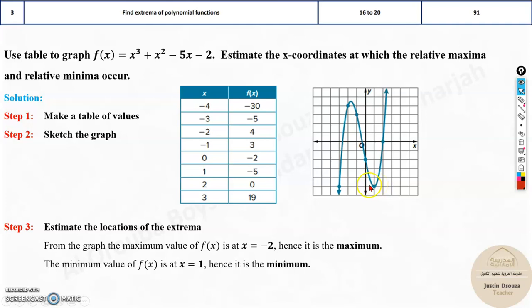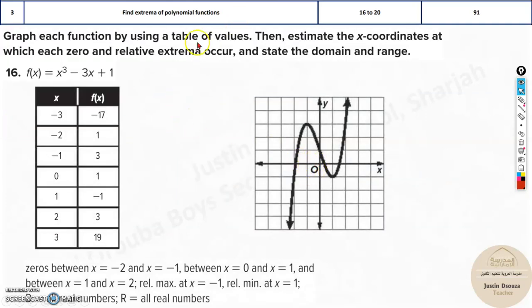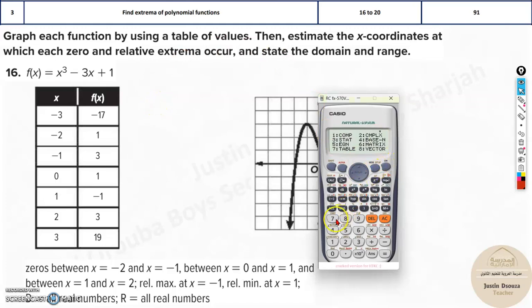There is one more method, another shortcut method. Since generally these are your answers, you can put this in the calculator and graph it. I'll just do it again if you have missed it. All you need to do is mode 7 and type in the equation. Alpha x cube plus alpha x squared minus 5x minus 2. Make sure you're typing it accurately and properly. Double check your equation after you type it.